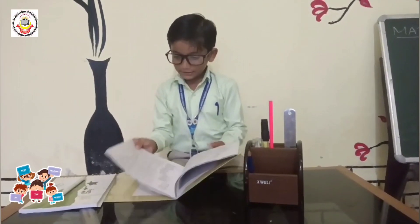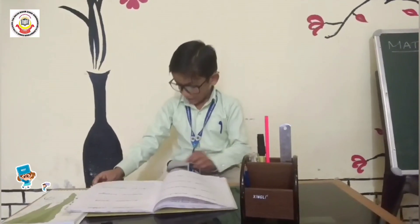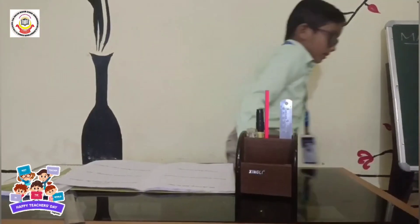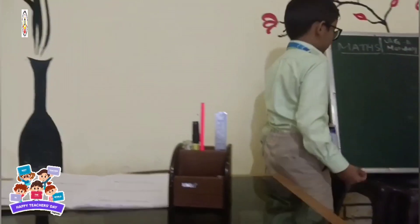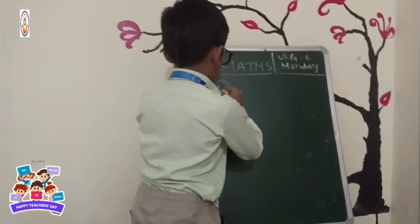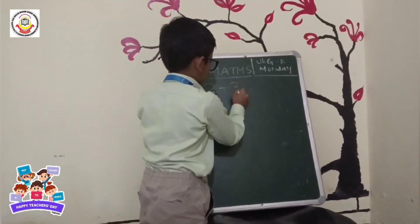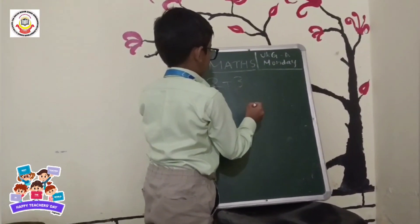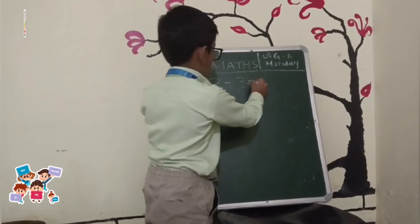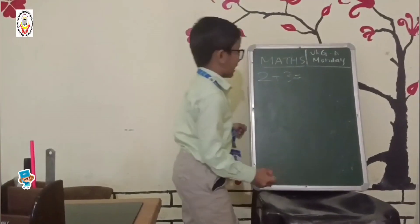All of you take your textbook, page number 29. All of you look at the board. Two plus three. What is the answer?